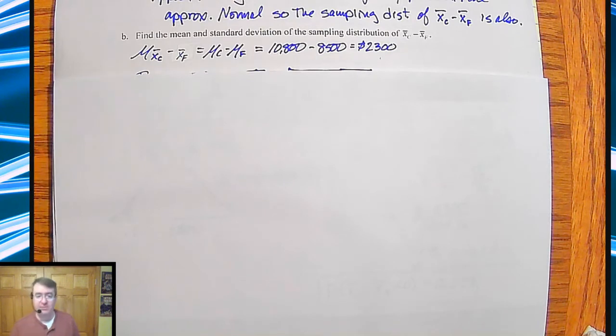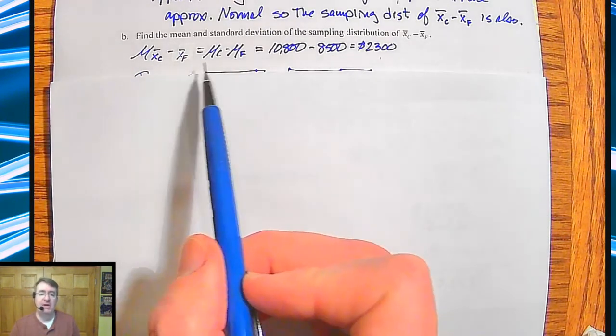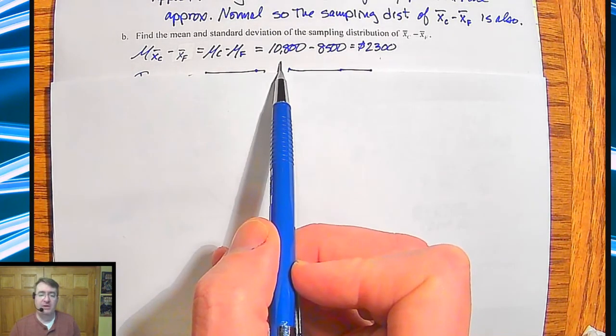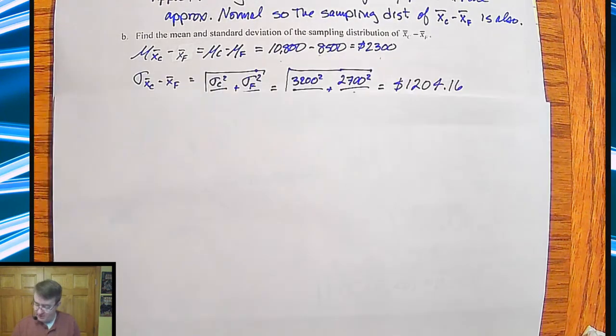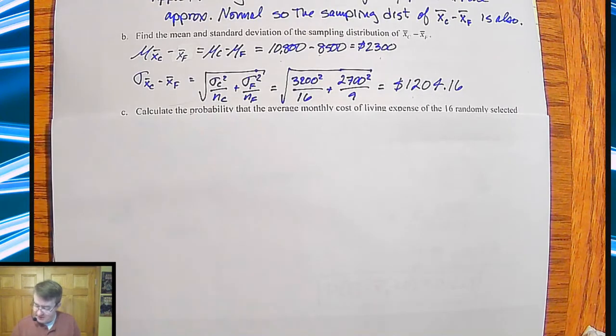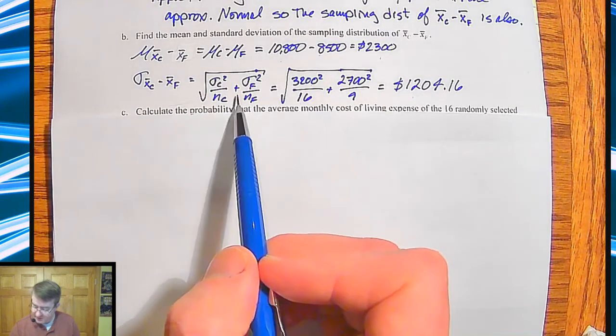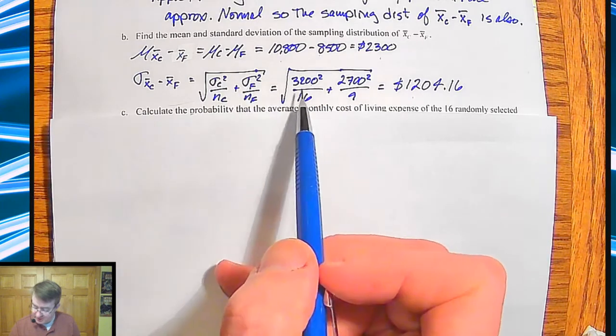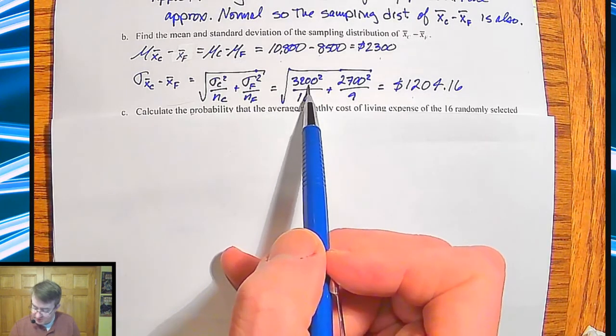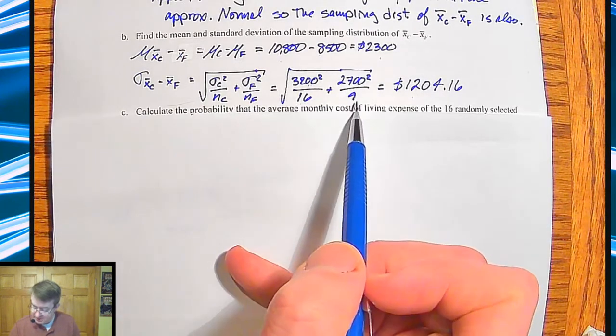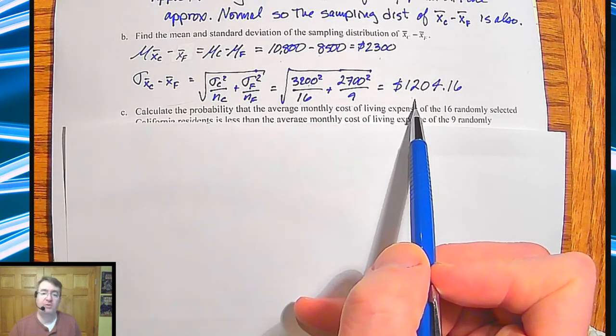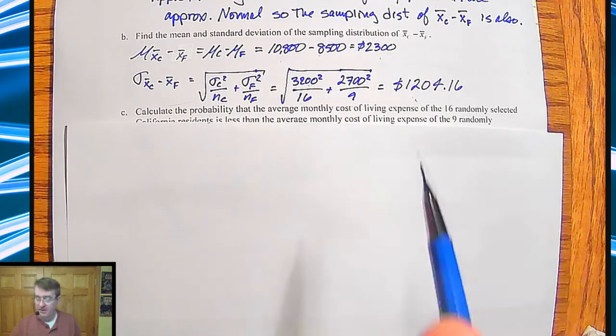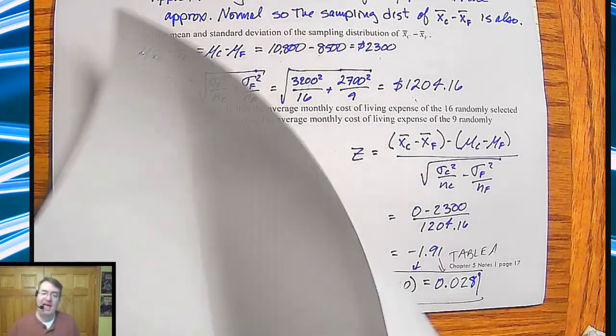In terms of your mean, mean is just the two differences. The mean from California is $10,800. The mean from Florida is $8,500. So there's a difference of $2,300. And then for your standard deviation, here's the formula. And so we're going to do this separately out here. $3,200 squared divided by 16, $2,700 squared divided by 9. Sum them, square root them, and you get $1,204.16. I feel like a car dealer there.